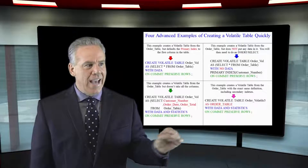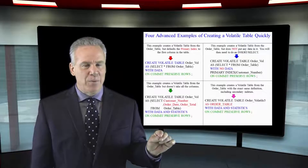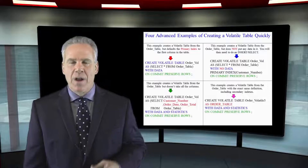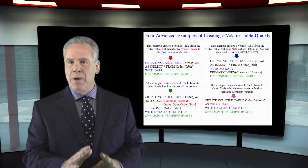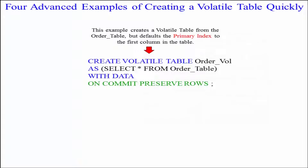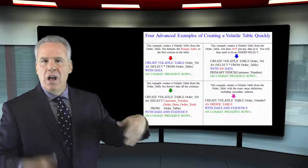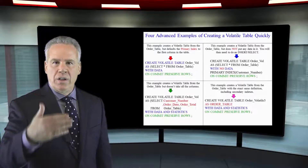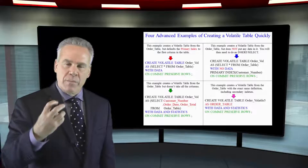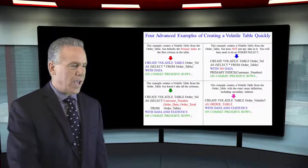Here are more excellent examples that you can really learn from. I'll try to take my time here, but move quickly at the same time. Let's look at the first example in red. We're going to create the volatile table order_vol as select everything from the table with data on commit preserve rows. It's going to pull the information from the table like we've seen in the past.